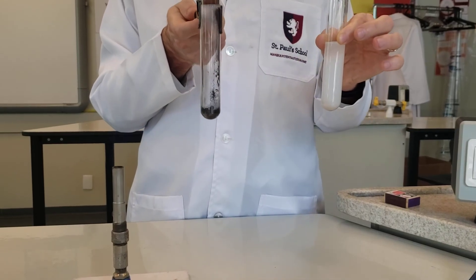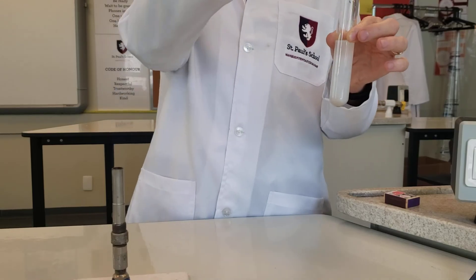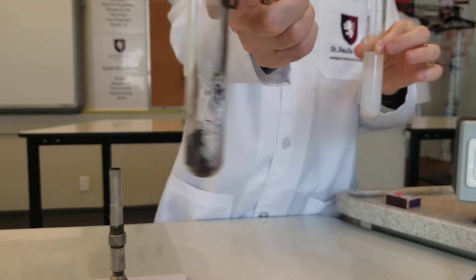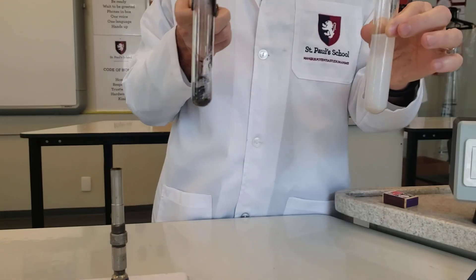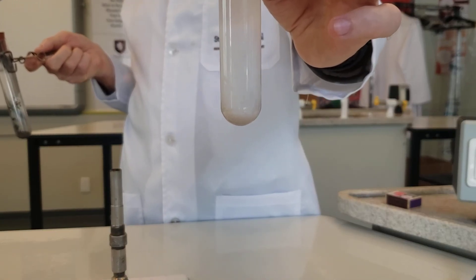That is the heating of copper carbonate. There we are. There's my black copper oxide and carbon dioxide form. It turns lime water milky. There we go.